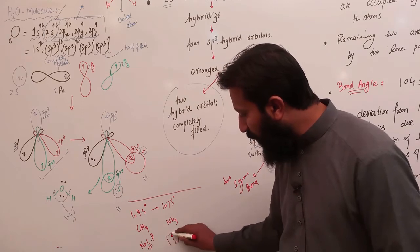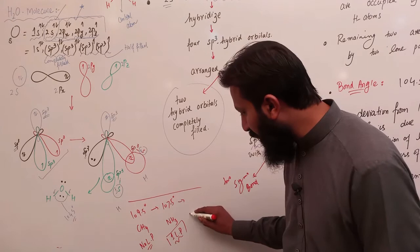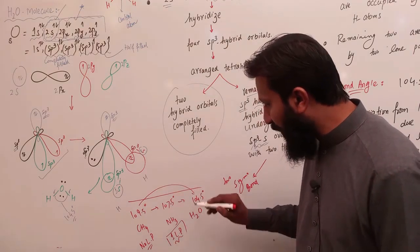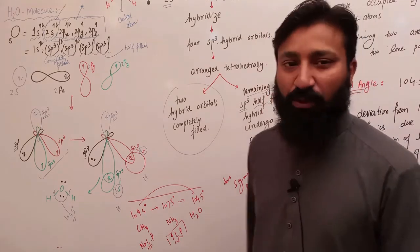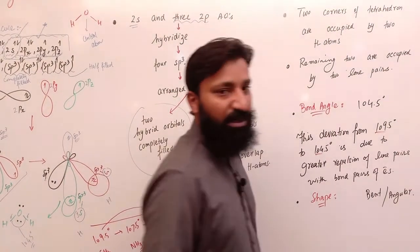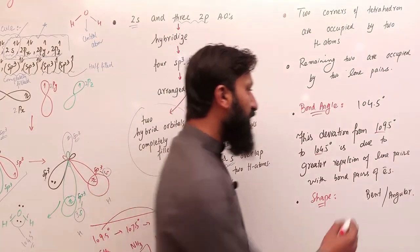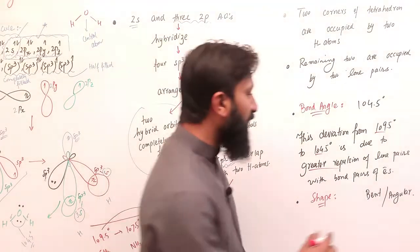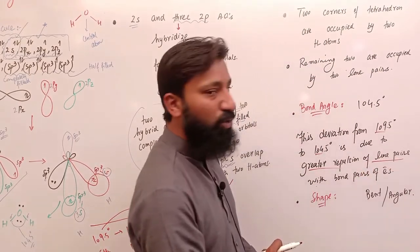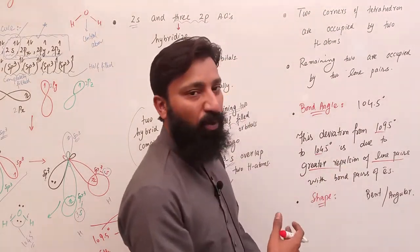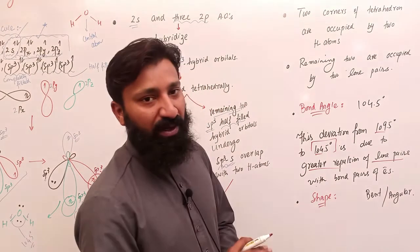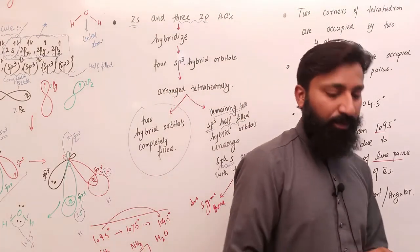The bond angle in water is 104.5° due to SP3 hybridization, because of greater repulsion due to the presence of two lone pairs। These two lone pairs greatly repel the bond pairs of electrons, which compresses the bond angle। This means the water molecule has an angular shape।